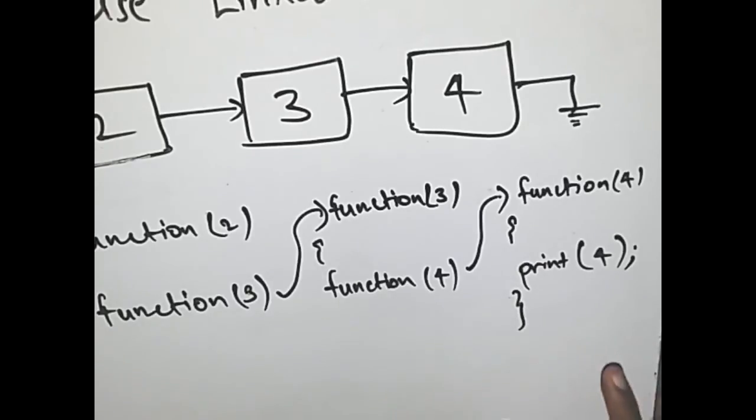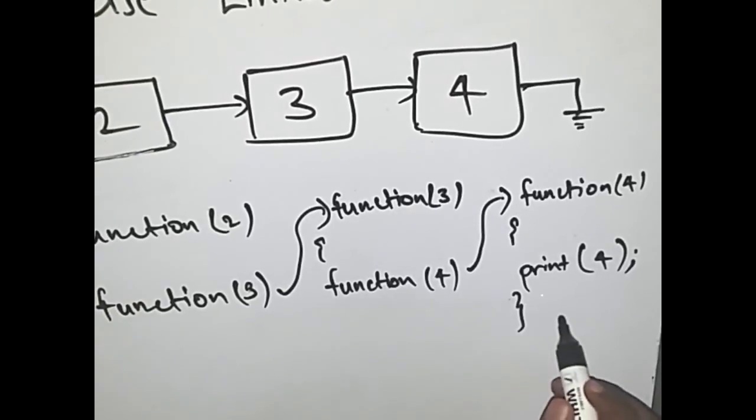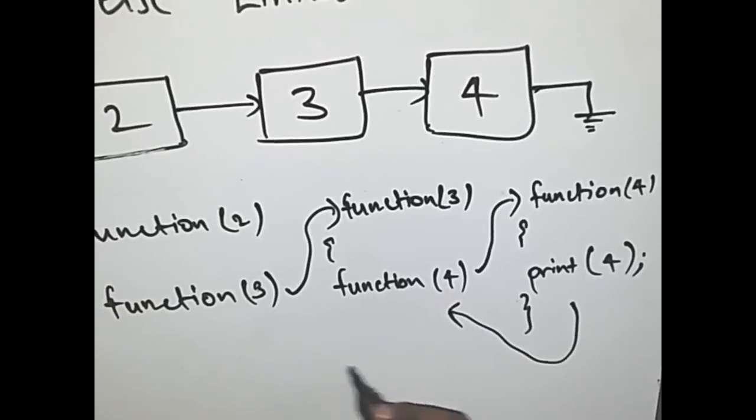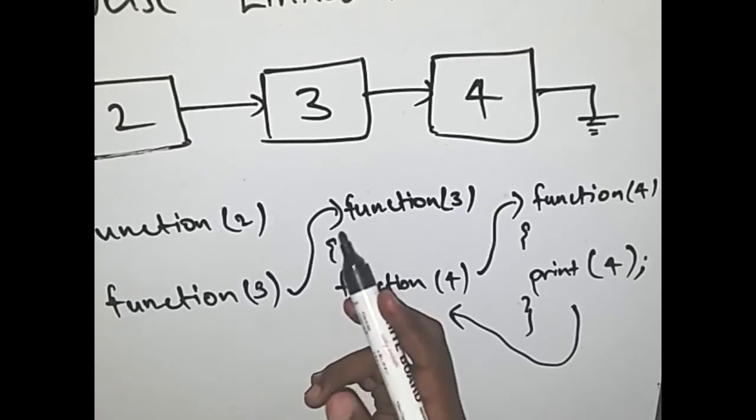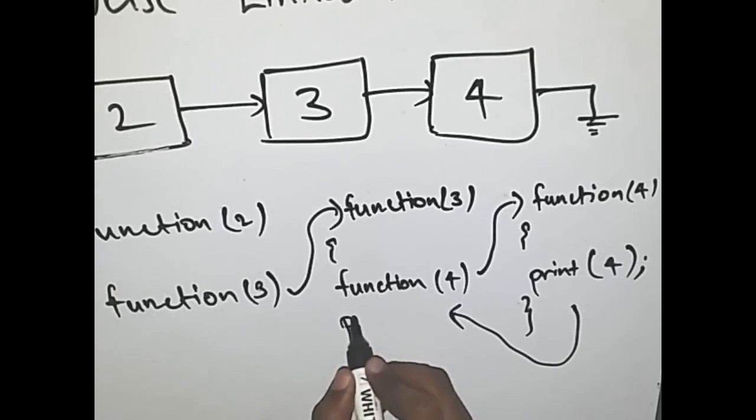Now as this function is completed, it goes back to the function that actually called it. So here it comes back here and then it executes the remaining of this function, that is print the data in 3.